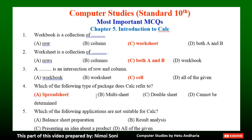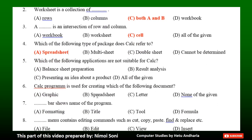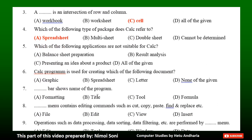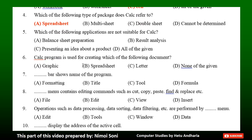Question 5: Which of the following applications are not suitable for CalC? Option A: Balance sheet preparation. Option B: Result analysis. Option C: Presenting an idea about a product. Option D: All of the given. The correct answer is Option C — Presenting an idea about a product.